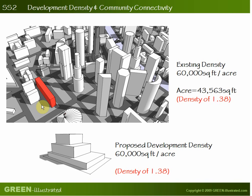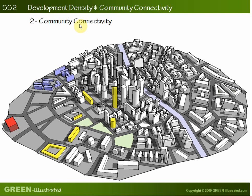The next option for compliance is community connectivity. Consider a scenario where we want to revitalize an area. The immediate vicinity has not had any development and is mostly low density; however, it is in close proximity to the city center. LEED doesn't want to penalize you for trying to be one of the first to revitalize and increase the density of this area, so they have established this path of compliance. If you meet these requirements, you can achieve this credit even though your immediate surroundings are low density.